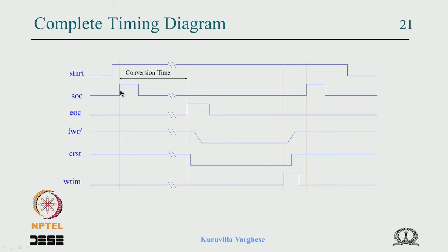Let us see the updated timing diagram. Everything remains the same: when start comes, the start of conversion is given by the controller; wait for end of conversion — the conversion time spans from SOC to EOC. Then the controller does two things: makes the FIFO write low and the counter reset low, and the counter starts counting. The controller waits for the write time signal. When the write time signal comes from the decoder, the counter is reset and FIFO write is made inactive by making it 1. Then again check for start — if start is 1, begin the next start of conversion.